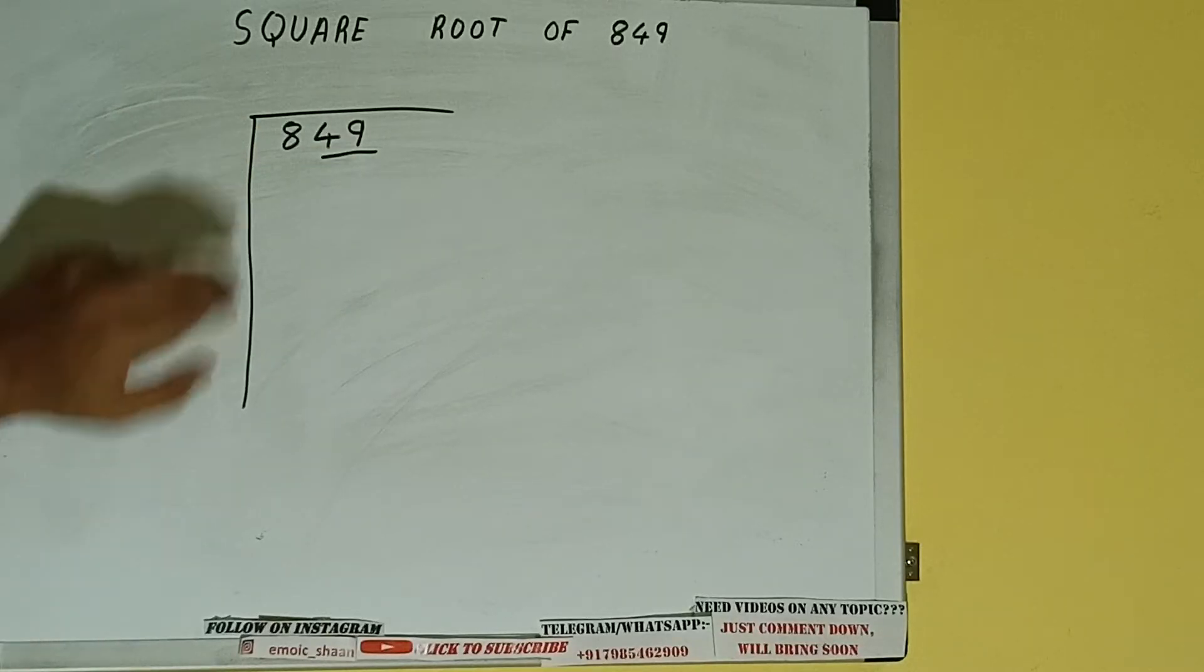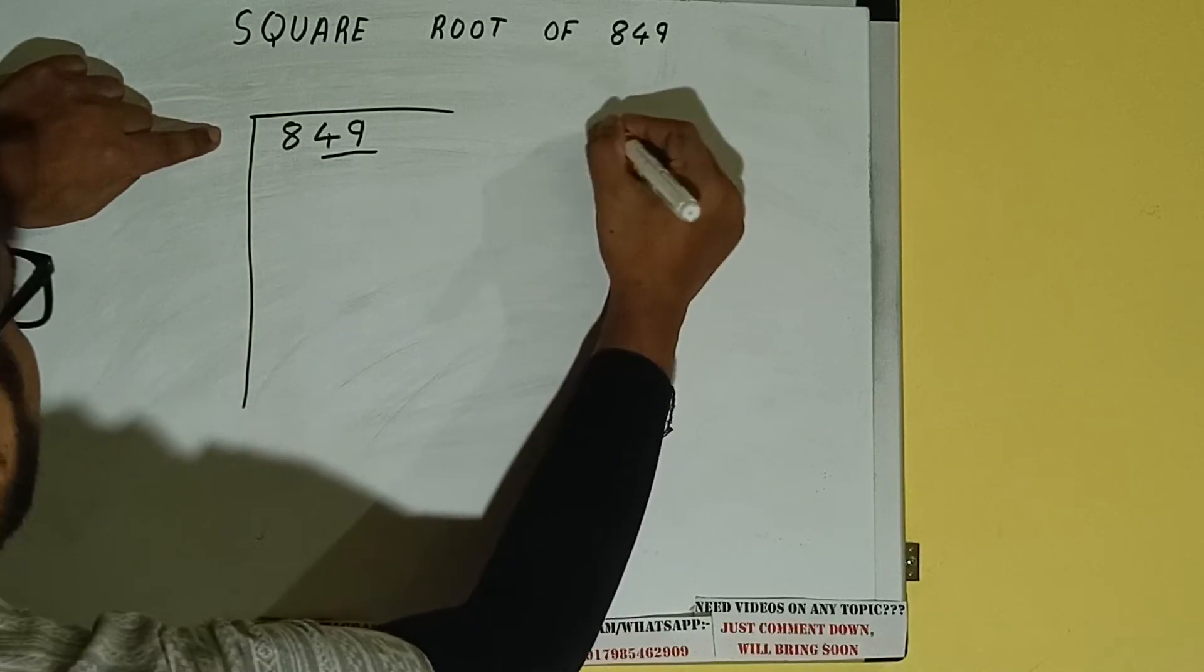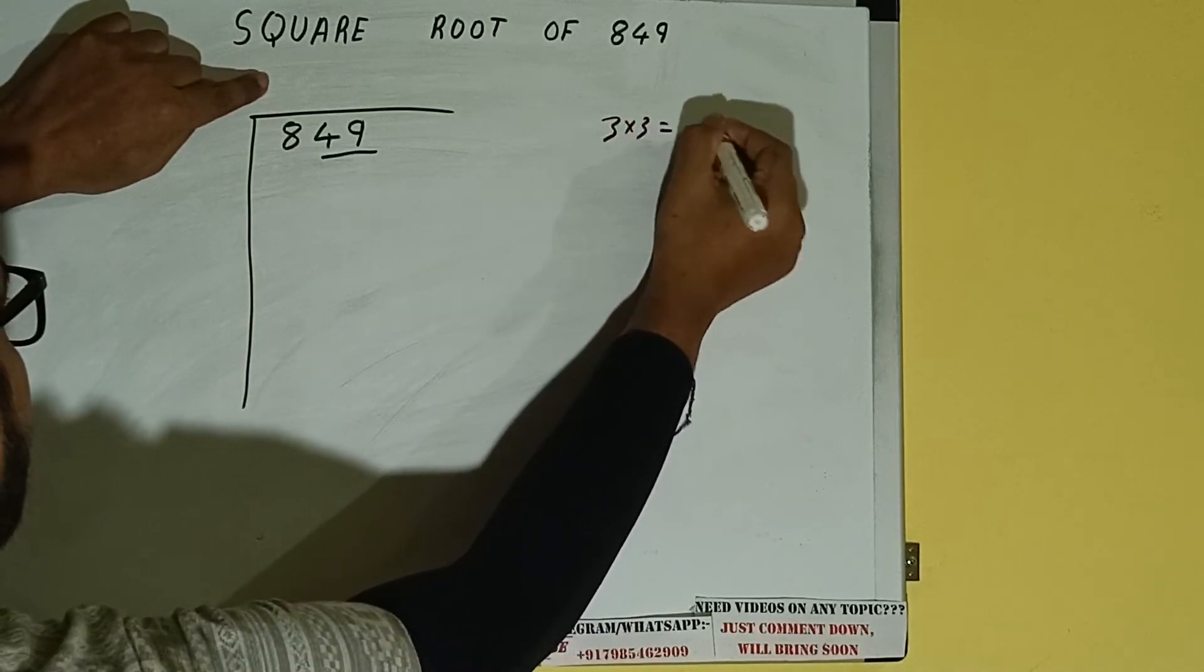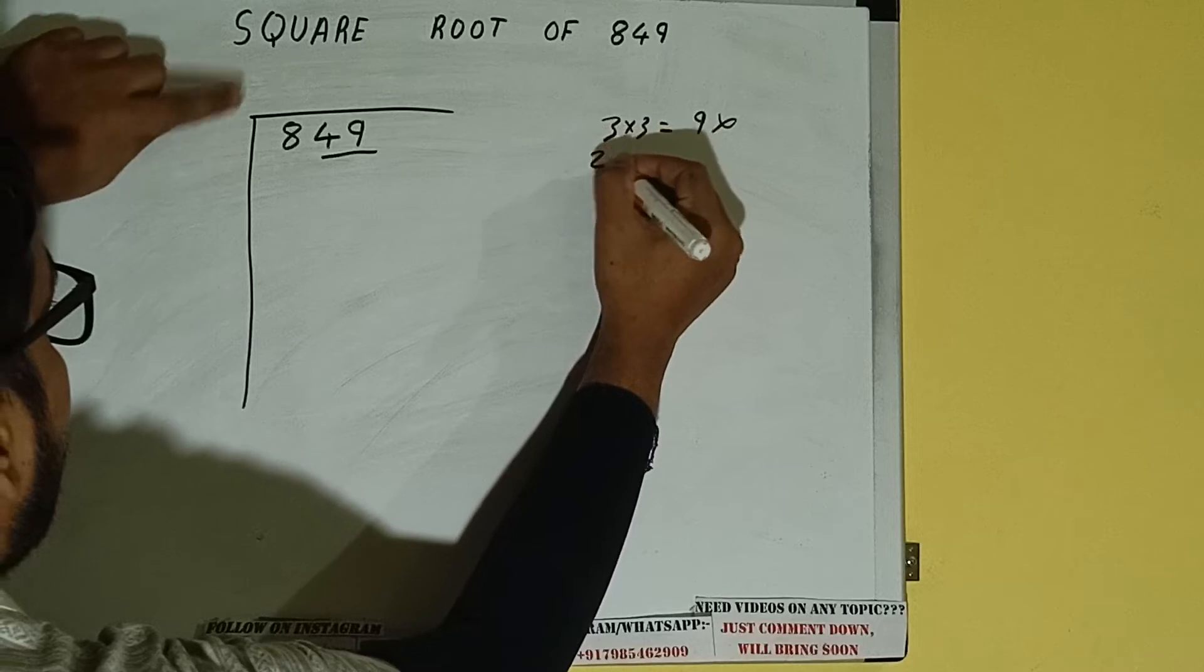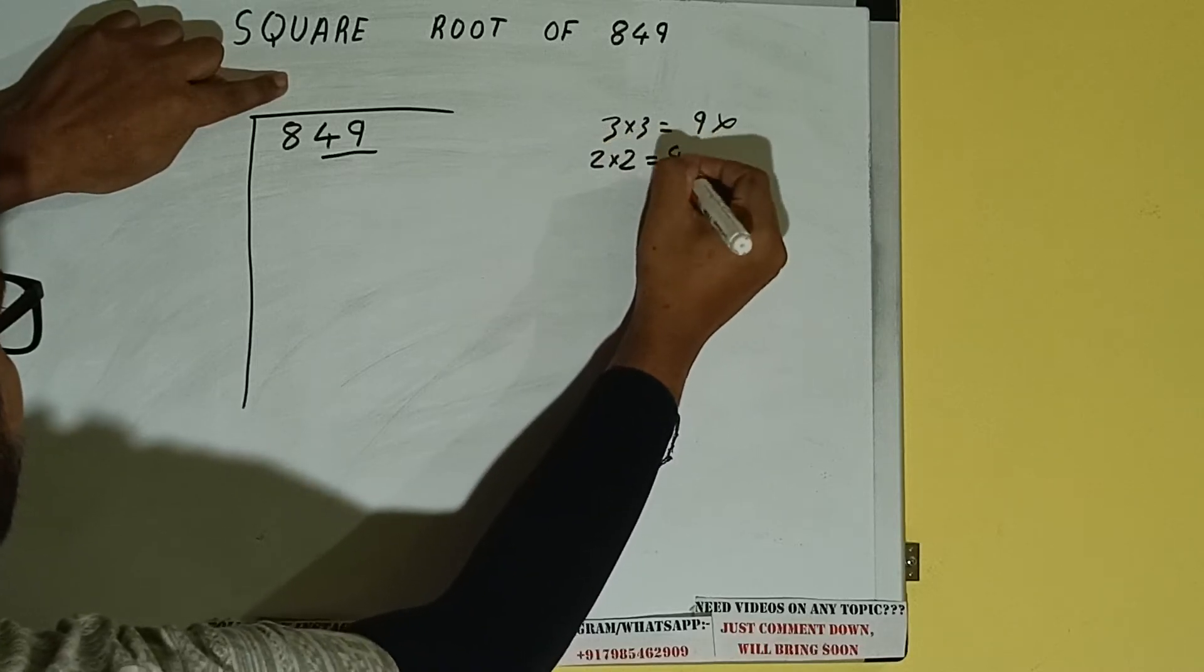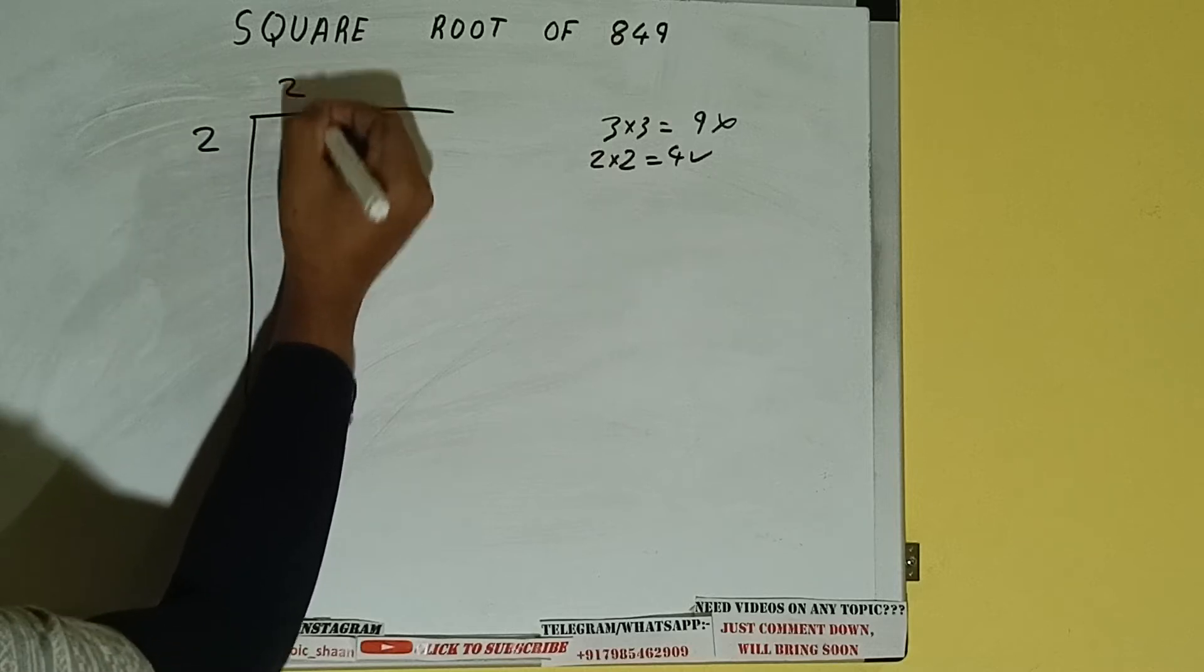The rule is whatever number we write here, we have to write here also. If we write 3 here and 3 here, it will be 9 which is greater than 8, so we cannot take it. If we write 2 here and 2 here, it will be 4 which is good to take. So 2 here and 2 here is 4.